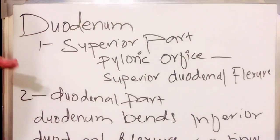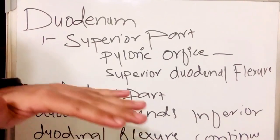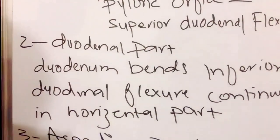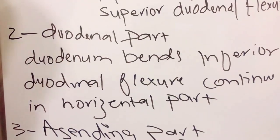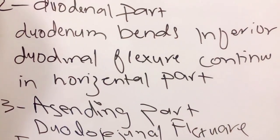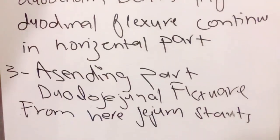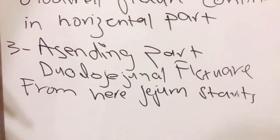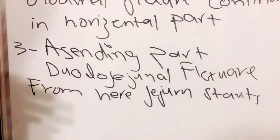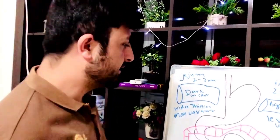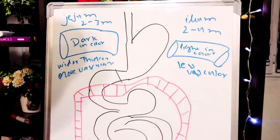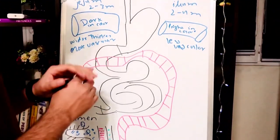Now we will talk about the pinpoints of the duodenum. The superior part starts from the pyloric orifice at the superior duodenal flexure. The duodenum then bends at the inferior duodenal flexure, forming the descending duodenum. This flexure continues into the horizontal part, and in the ascending part of the duodenum it starts from the duodenojejunal flexure.